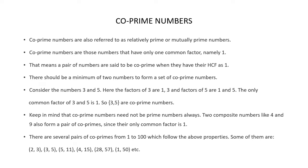Co-prime numbers are also called relatively prime or mutually prime numbers. Co-prime numbers are those numbers that have only one common factor, that is 1. This means that a pair of numbers are said to be co-prime when they have their HCF as 1. So if two numbers have 1 as the HCF, then they are co-prime numbers.